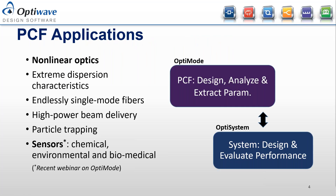Photonic crystal fibers can be used in a wide range of applications. These include non-linear optics, extreme dispersion characteristics, endlessly single mode fibers, high power beam delivery, particle trapping, as well as sensors, which was the topic of one of our recent webinars with the OptiMode product. In order to address these application spaces, our OptiMode product can generate data used by our other products.